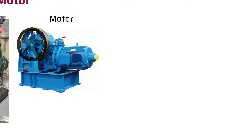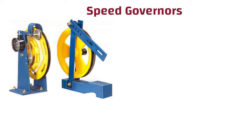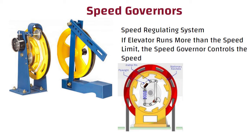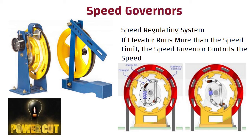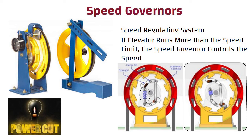Most elevators have an entirely separate speed regulating system called a governor, which is a flywheel with mechanical arms built inside it. Normally the arms are held inside the flywheel by springs, but if the lift moves too fast, they fly outward, pushing a lever mechanism that trips one or more braking systems. First, they might cut power to the lift motor. If that fails and the lift continues to accelerate, the arms fly out even further and trip a second mechanism applying the brakes.